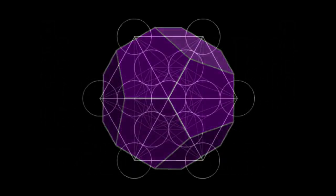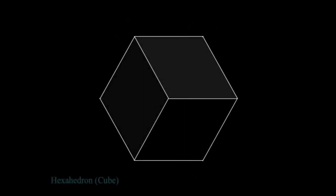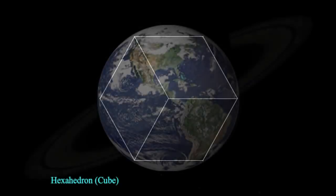So the first platonic solid we're going to look at is the hexahedron, or as it's best known as the cube. The cube represents solidity, power, control, the physical, really anything to do with structure. The cube is also highly associated with the element of earth and also the planet Saturn.